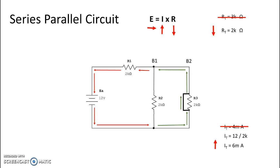6 milliamps is indeed higher than it originally was. There's really no need to look at the current through our branches — we know branch one has no current flow, and branch two is actually part of our series circuit, so it sees total current, which is 6 milliamps.